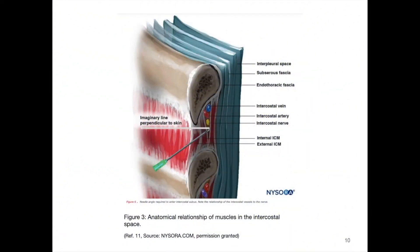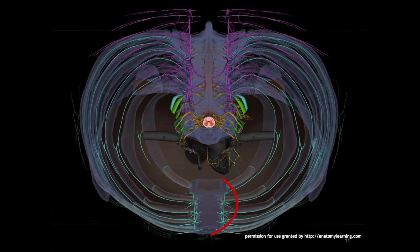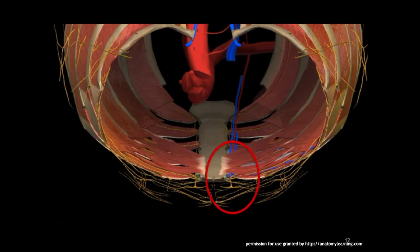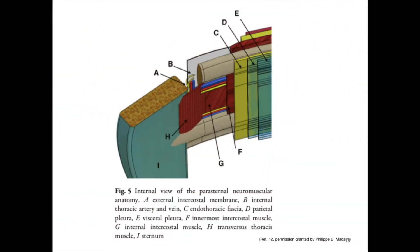Let's have a closer look at the anatomy to better understand the transverse thoracic plane block, which we will call TTP block during this presentation. The sternum's body derives innervation from the anterior cutaneous branches of intercostal nerves 2 to 6, displayed here with a red circle, and the sympathetic plexus around the internal thoracic artery. The nerves lie between the internal intercostal muscle, labeled capital G on this figure, and the transverse thoracic muscle within the transverse thoracic plane, labeled as capital H.